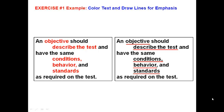First example: we will see how to color a text and draw lines for emphasis. Emphasis means for importance. Here in one box we have this objective — describe the text, conditions, behavior, standards — in red color. And in another box we have underlines but in a thick line. We will see how to do this.